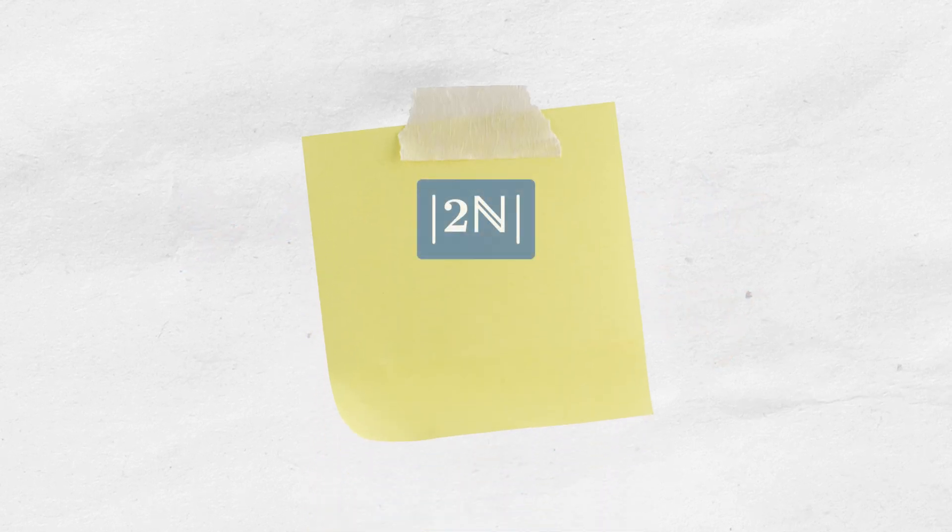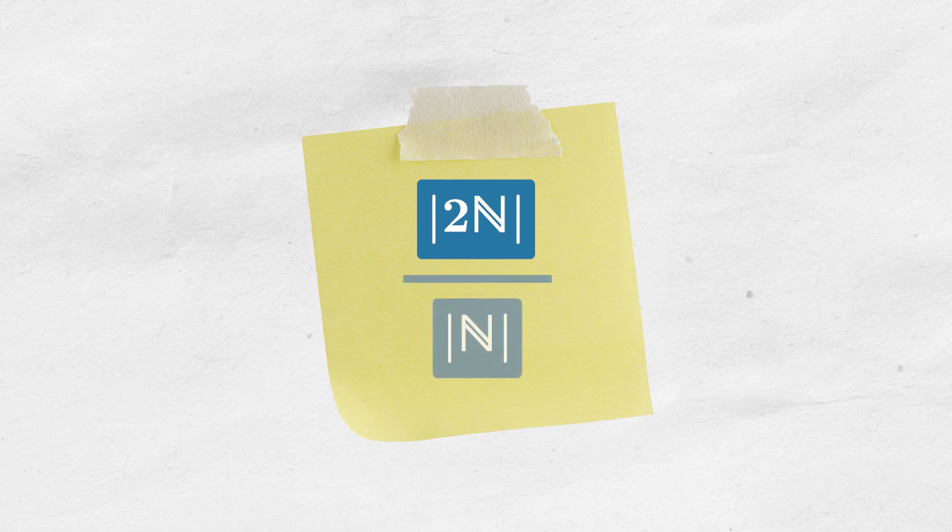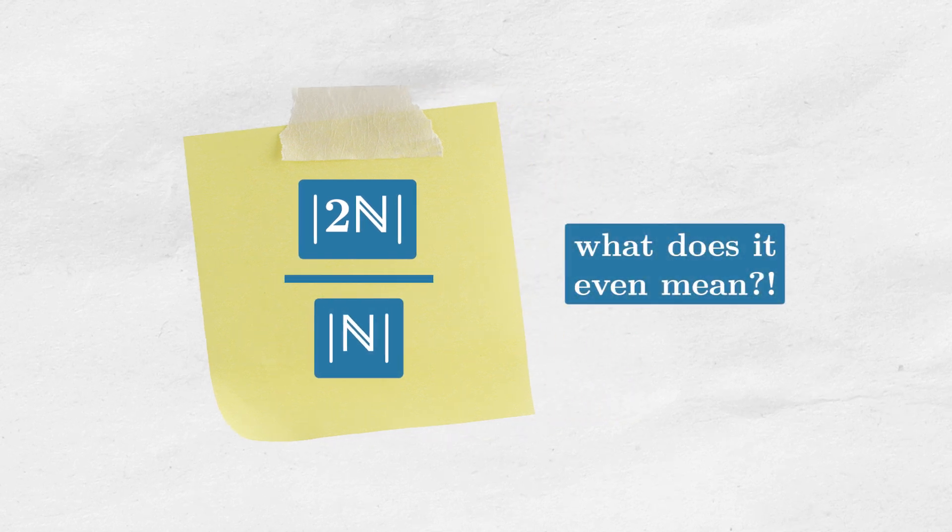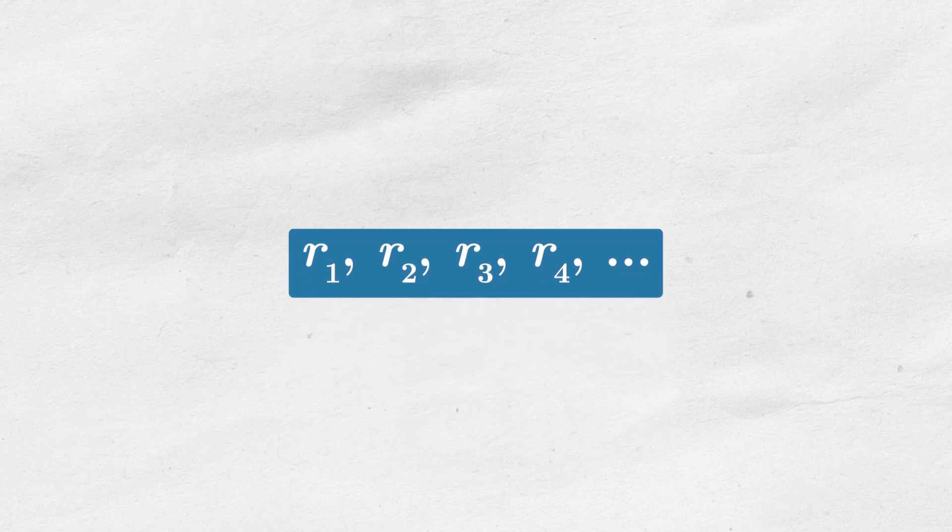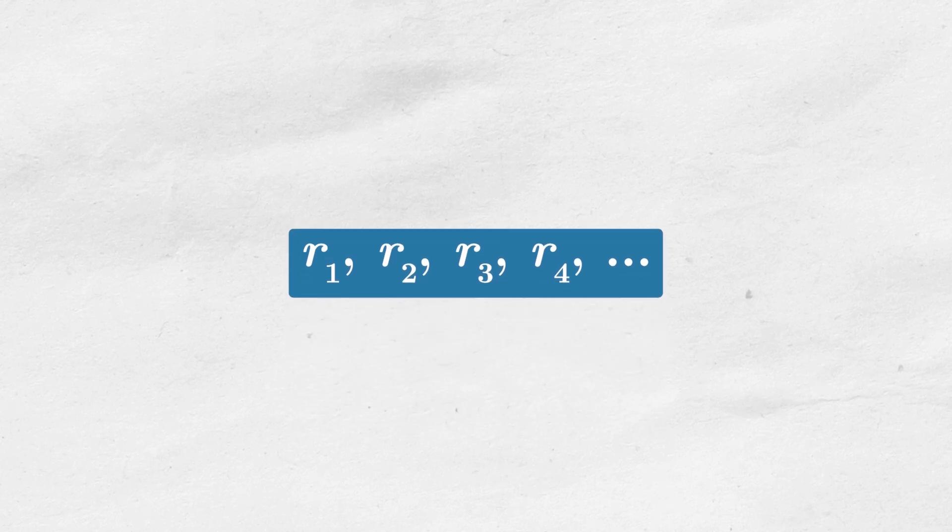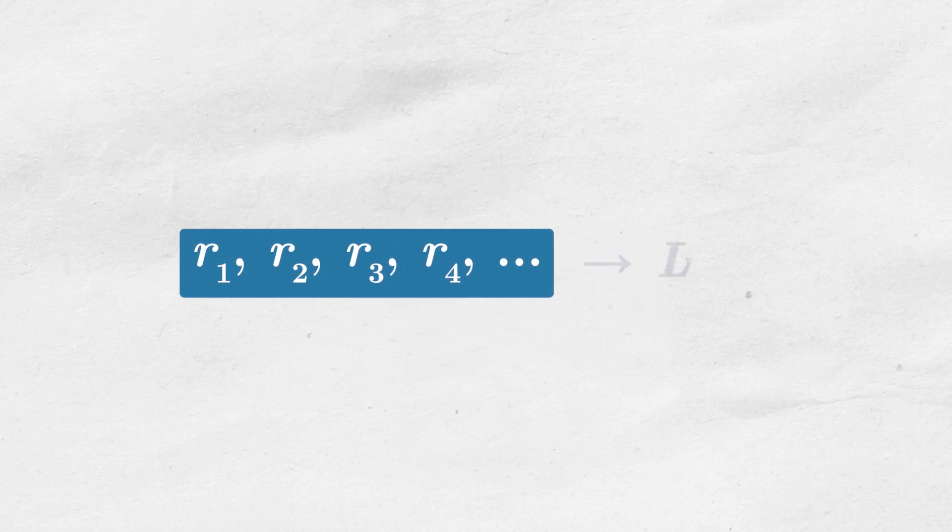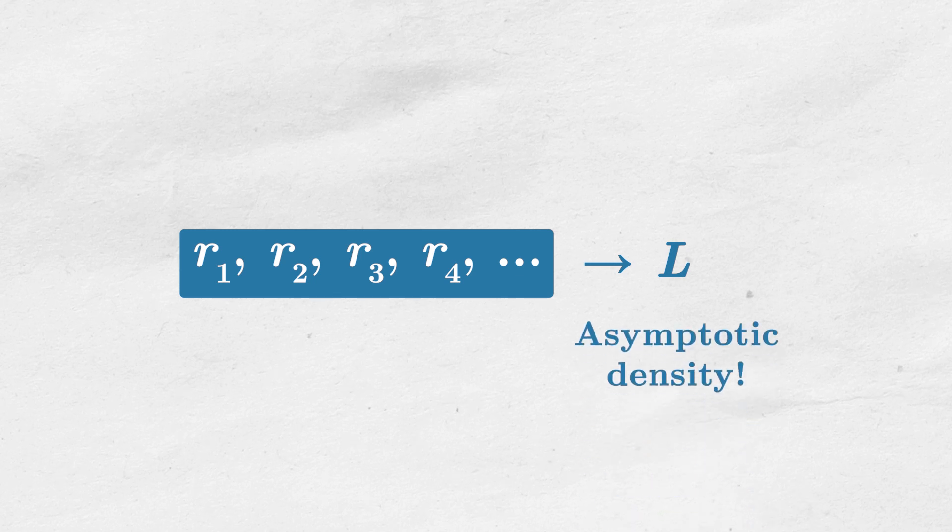The idea is simple. Instead of calculating the ratio between the number of even numbers and the number of all numbers, whatever that ratio would mean, we will consider a sequence of such ratios, but for sets that are finite. The limit of this sequence will be the asymptotic density we are seeking.